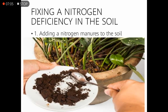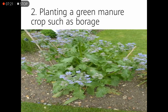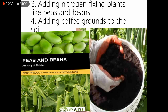To fix a nitrogen deficiency in the soil, we can: first, add nitrogen manure to the soil. Second, plant a green manure crop such as a bridge crop. Third, add nitrogen-fixing plants like peas and beans. Fourth, add coffee grounds to the soil. Growing beans and peas is especially effective since they are nitrogen-fixing plants that can fix nitrogen directly into the soil, overcoming nitrogen deficiency.